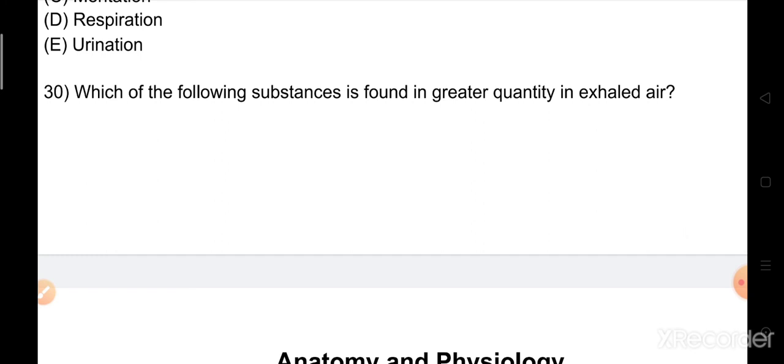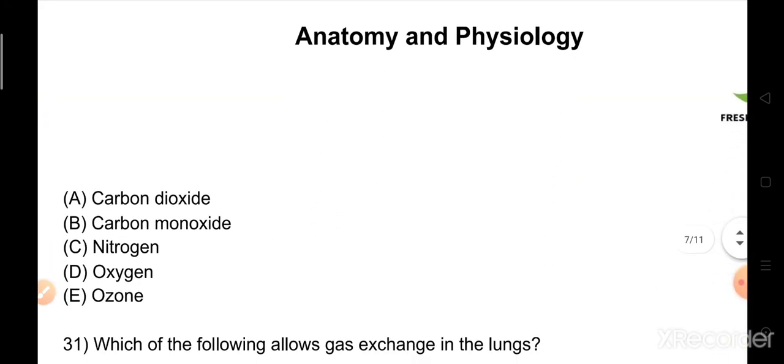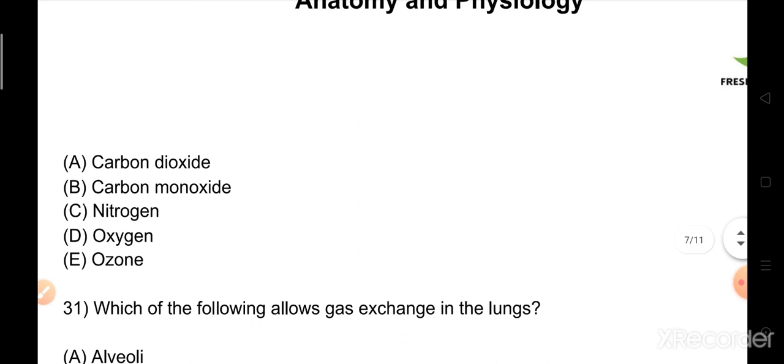Question number 30: Which of the following substances is found in greater quantity in exhaled air? Options: A) carbon dioxide, B) carbon monoxide, C) nitrogen, D) oxygen, E) ozone. The right answer is option C, oxygen. Thank you.